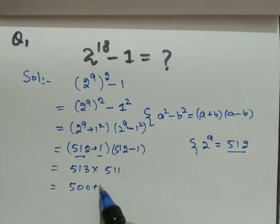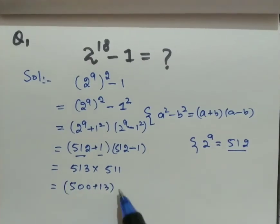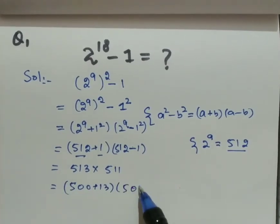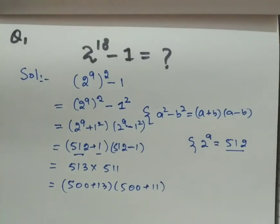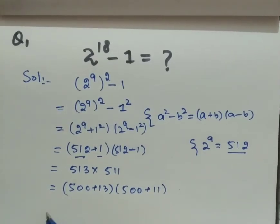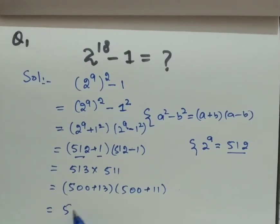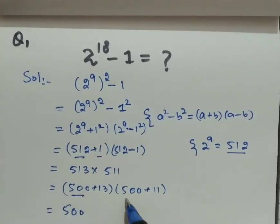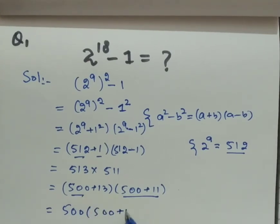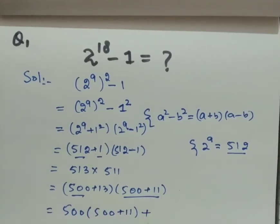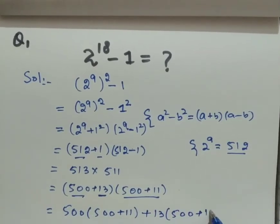We can write this as (500 + 13) times (500 + 11). So now we will directly solve it: 500 times (500 + 11), and then 13 times (500 + 11).